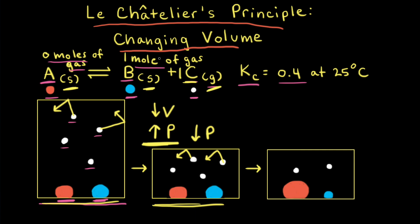However, that's not what the reaction wants to do. The goal of the reaction is to relieve the stress and therefore decrease the pressure. So the reaction is going to go to the left to get rid of some of that gas, and decreasing the amount of gas will decrease the pressure, therefore relieving the stress.